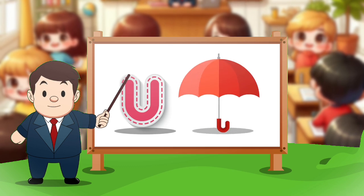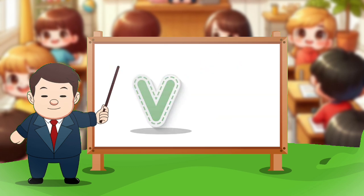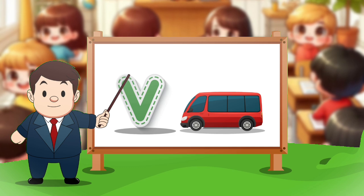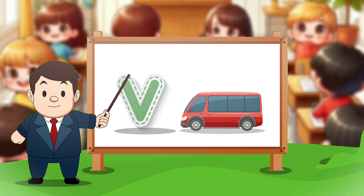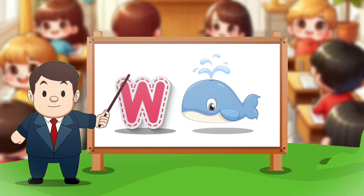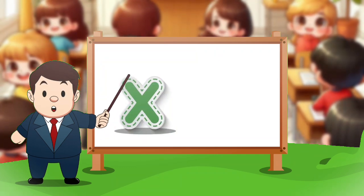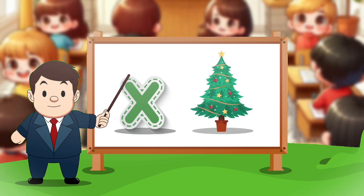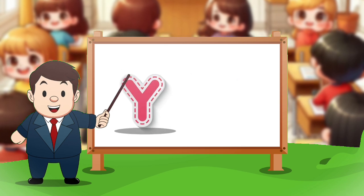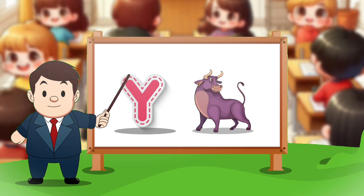U. U for umbrella. V. V for violin. W. W for whale. X. X for Xmas. Y. Y for yak.